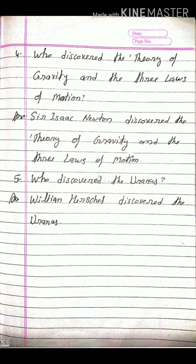Question number five: who discovered Uranus? Answer is William Herschel. All these exercises you have to write in your copy in a proper way, and you have to learn them also. Write match the following, name the following, and question answers in your copy.